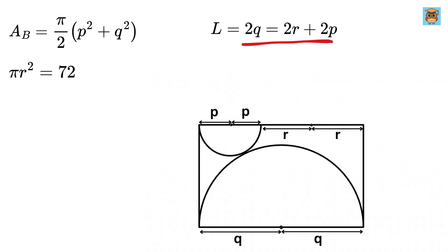Therefore, we have 2Q equals 2R plus 2P, or remove the 2 to get Q equals R plus P. Now, take P to this side to get Q minus P equals R. Great!